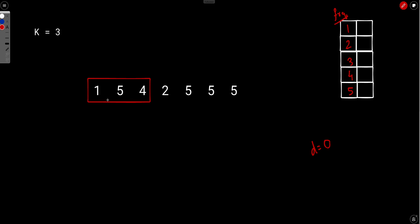Initially we have elements 1, 5, 4. We go ahead and mark the frequency of 1 as 1, 5 as 1, and 4 as 1. Let's take element 1 first: increment its frequency. After incrementing, the frequency of 1 is 1, which means this is the first time 1 is occurring. Because this is the first time it is occurring, we increment the value of distinct. Our distinct is now 1.